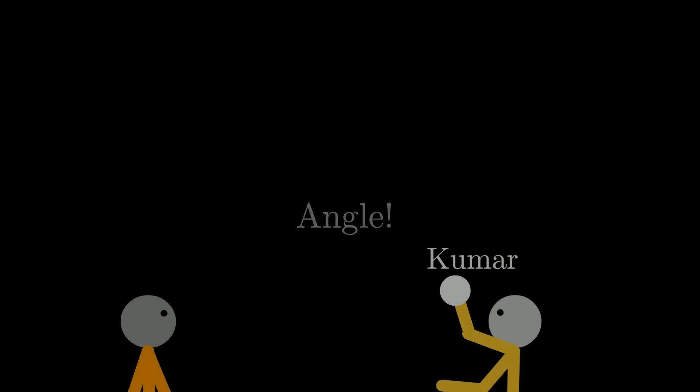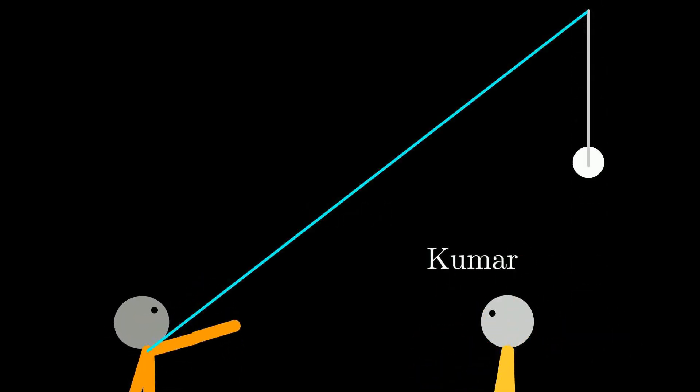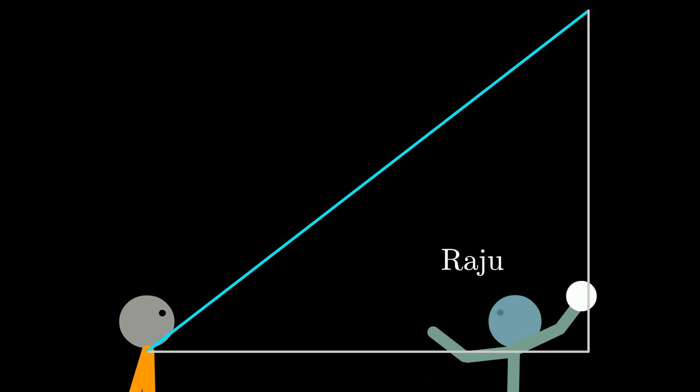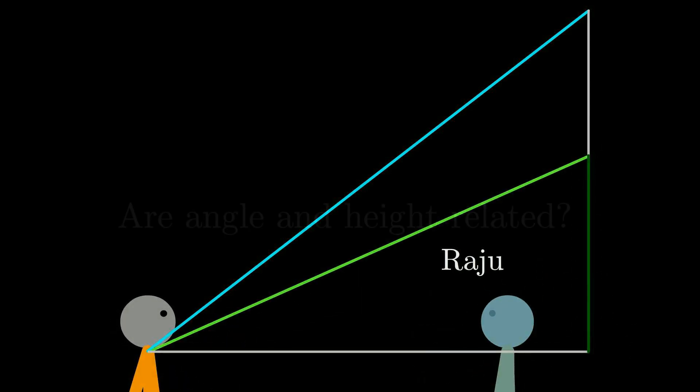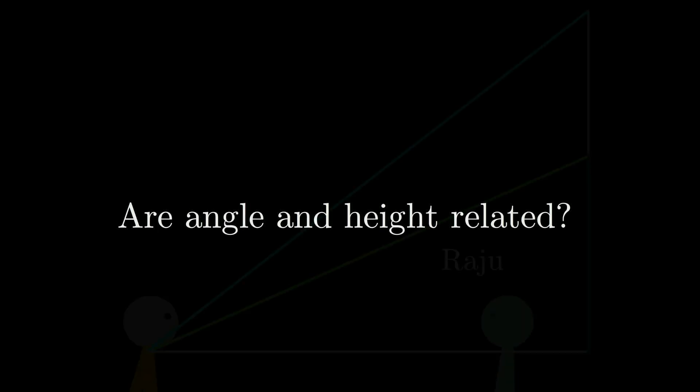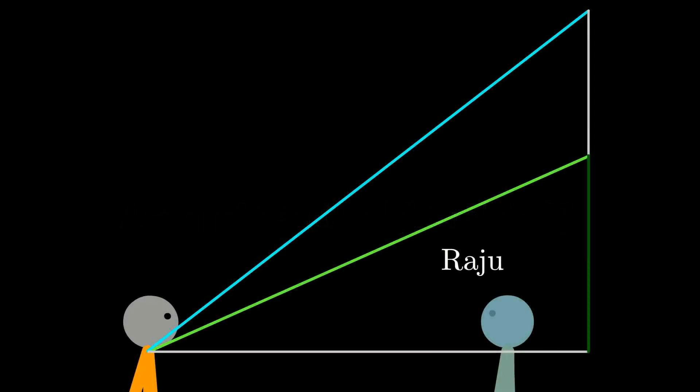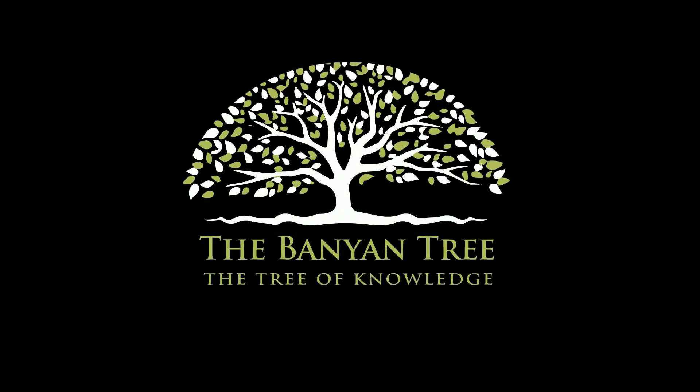Of course, it is the angle at which the referee pointed. If you notice carefully, the angle by which Ramu lifted his hand for Kumar was much higher than the angle for Raju. But wait, does this mean that angle and height are somehow related? If both angle and height are more for Kumar, can we use angle as a way to measure the exact height at which the ball was thrown? Welcome to the Banyan Tree. Today is all about trigonometry and what it means.